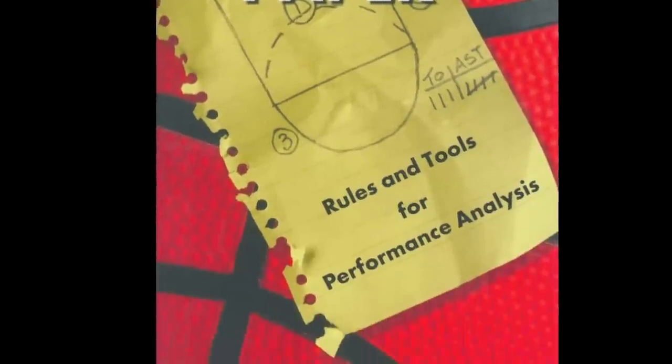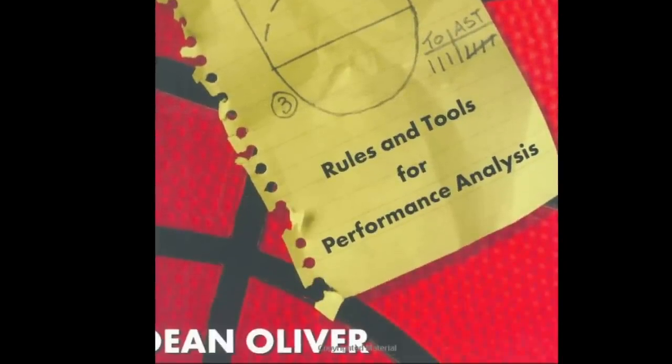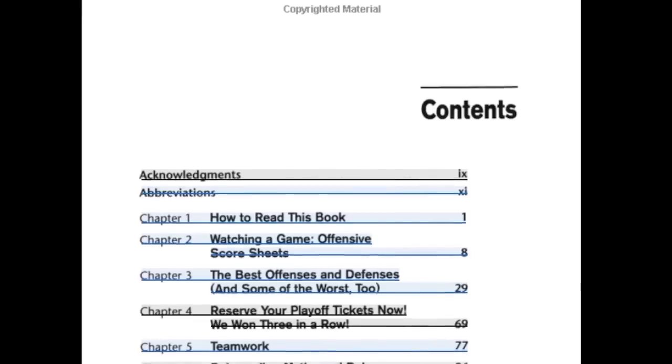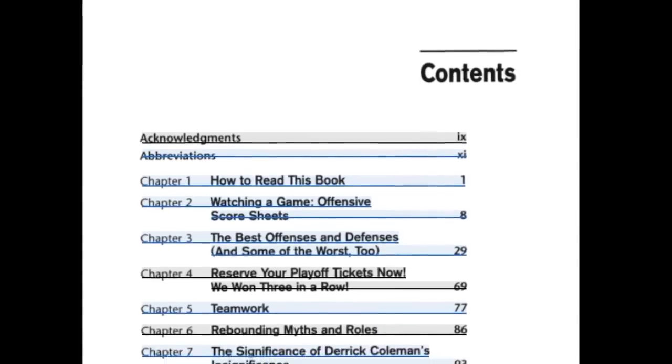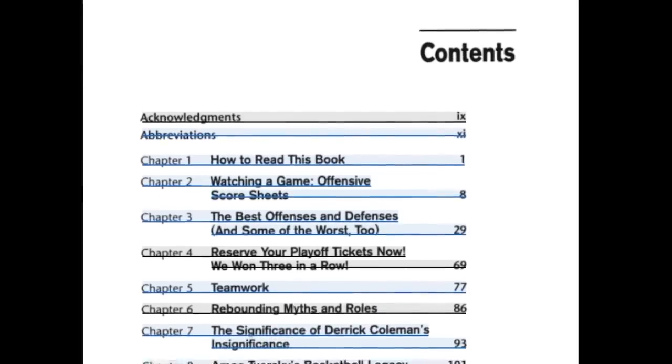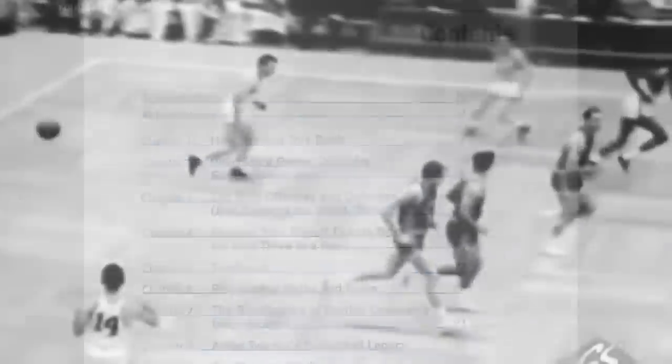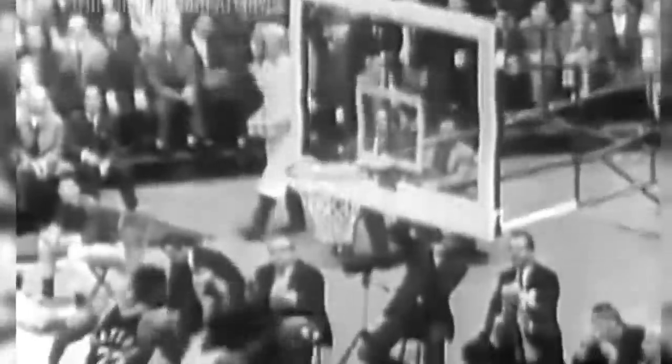It turns out that per-possession efficiencies like this almost perfectly predict team performance in basketball, whereas per-game averages do not. This was a major breakthrough popularized by Dean Oliver in his seminal book Basketball on Paper in 2004. It's also why we've revised our ideas about players and teams. Bill Russell's Celtics were viewed as an offensively successful team because they played at a fast pace and led the league in points per game, but they weren't actually that efficient on offense per possession.